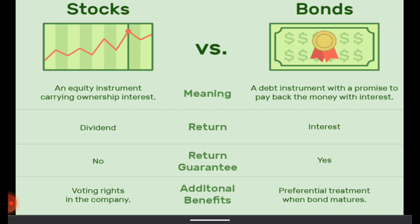Talking about return: in stocks, the return is called dividend. When the company makes profits, it distributes that to stockholders or equity holders in the form of dividends. Whereas the return in the case of bonds is called interest — the interest payments made by the company to the bond holders.